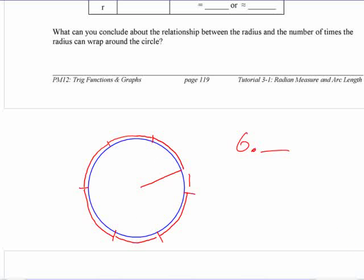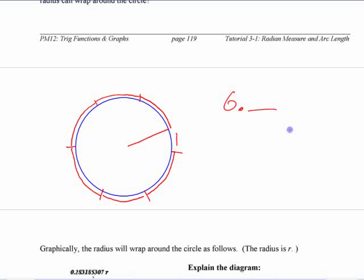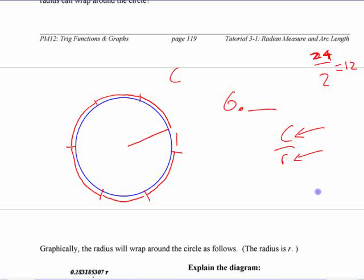I asked you to count how many times the radius fits around the outside. You could figure that out by just knowing what the circumference is. If you have the circumference and you want to know how many times the radius fits around the outside, you could just divide it. If you want to know how many times two fits into 24, you divide it. I'm trying to get you to connect it to what you know. If you have a circumference of whatever it happens to be and a radius of whatever it happens to be, you divide it and you get the number you're looking for.